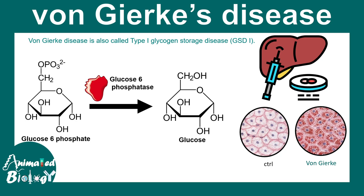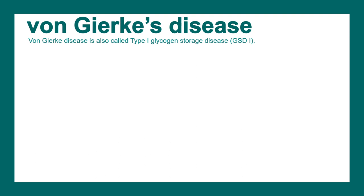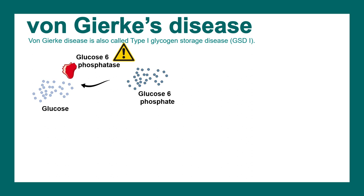In this video we'll talk about Von Gierke's disease. This is a glycogen storage disorder and the major gene that is mutated here is the G6PC gene, which is essential for the glucose-6-phosphatase enzyme. In this disease, glycogen metabolism is disrupted, leading to many consequences. One key step in glycogen breakdown is converting glucose-6-phosphate into glucose, triggered by glucose-6-phosphatase, and a mutation in the gene producing this enzyme leads to faulty metabolism.